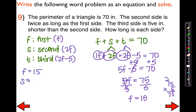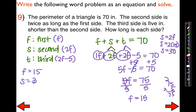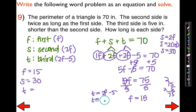The second side was 2F, so 2 times 15 equals 30. The second side is 30, which makes sense because it was twice as long. What about the third side? The third side was 2F minus 5, so 2 times 15 is 30, minus 5 gives us 25. The third side is 25 inches.